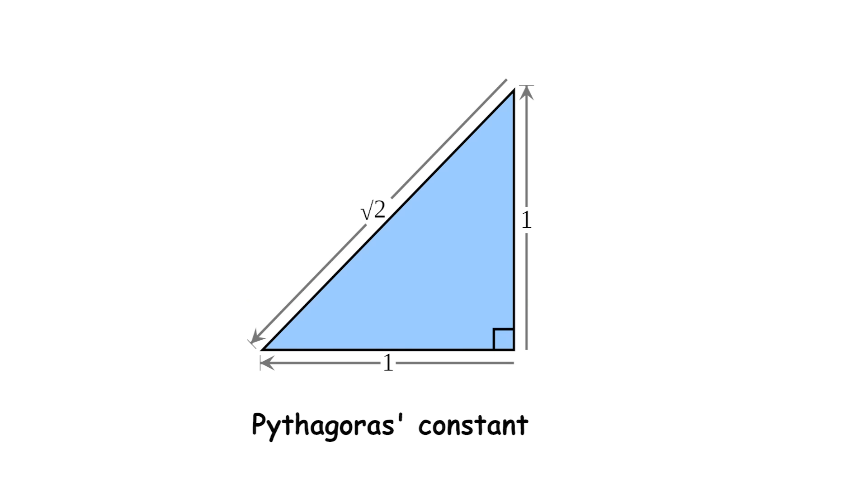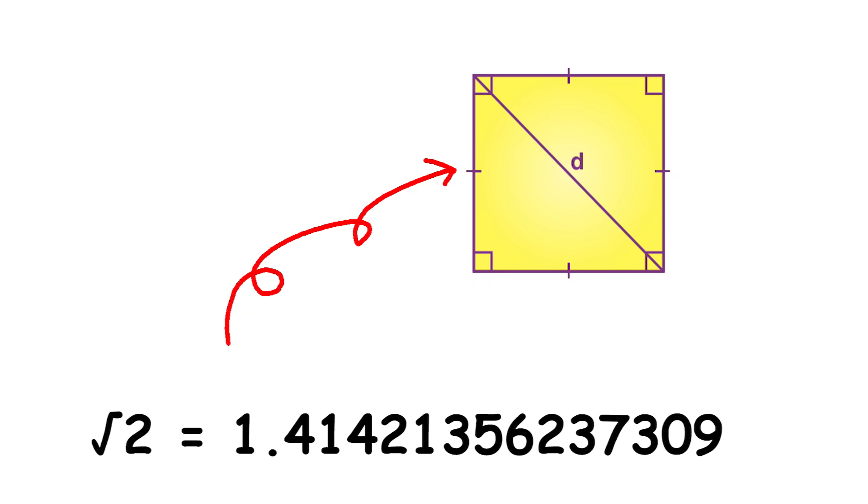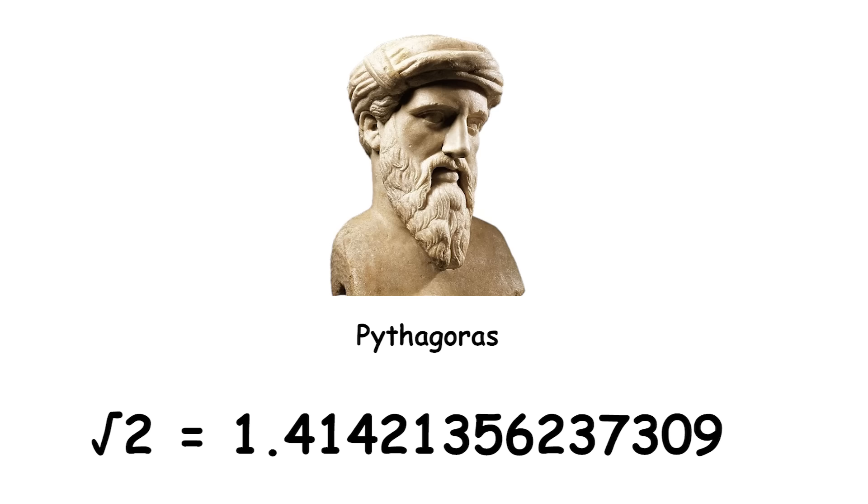The square root of 2 is a fundamental mathematical constant, also known as Pythagoras's constant. Square root of 2 represents the length of the diagonal of a square with side length 1. This special number, which is approximately equal to 1.4142, was first studied in depth by the ancient Greek mathematician Pythagoras and his followers.